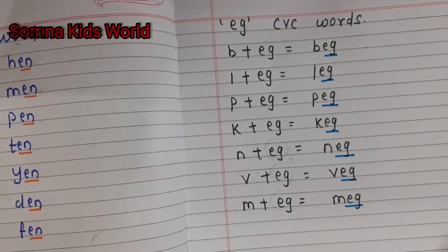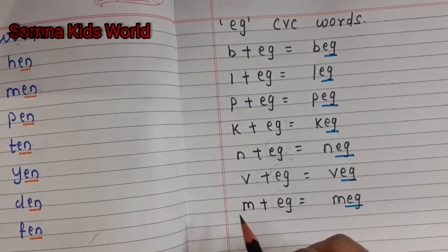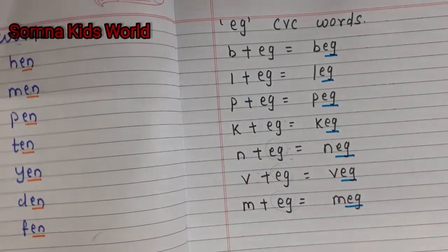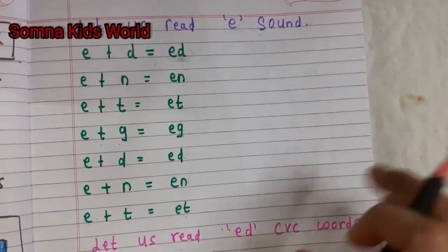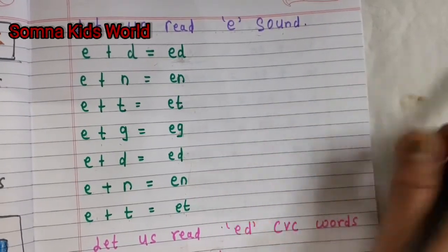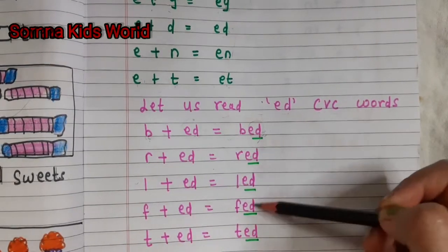About the a-family words, I have already shared a video — I have shared the link in my description box. You can go through that link and see the a-family words. For phonics, I have also shared a link in the description box. I hope you understood how to teach your kids about these e-family sounds — how to teach two-letter words and CVC words.